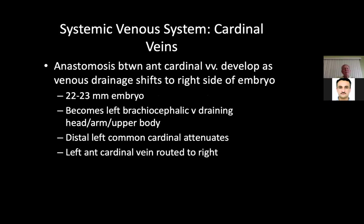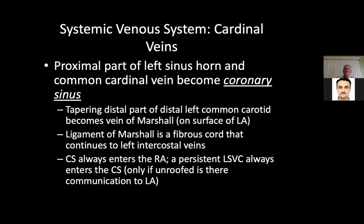Are you appreciating how much this seems like it could all go wrong? The anastomosis between the anterior cardinal veins develops as venous drainage shifts to the right side, and the 22-23 millimeter embryo develops the left brachiocephalic vein draining the head, arm, and upper body. The distal left common cardinal attenuates and the left anterior cardinal vein is routed to the right — that's how we get the innominate vein draining everything and lose the left SVC.